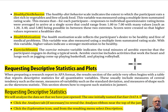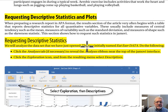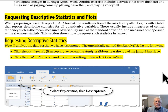Still on page six: requesting descriptive statistics. We'll analyze the dataset named EatExer Data. Click the Analyses tab to reveal the analysis ribbon near the top of the Jamovi interface. Then click the Exploration icon and from the resulting menu select Descriptives.